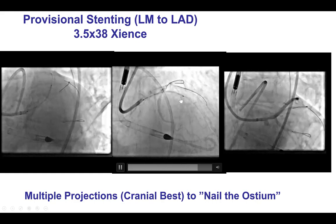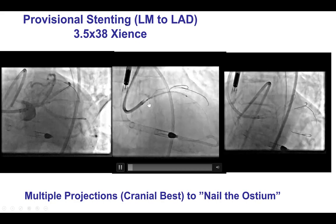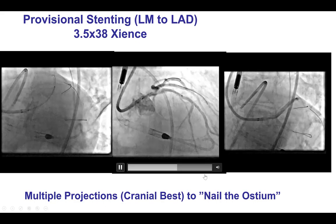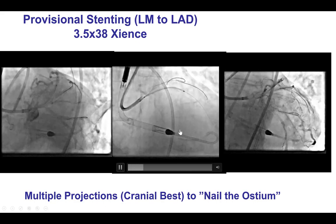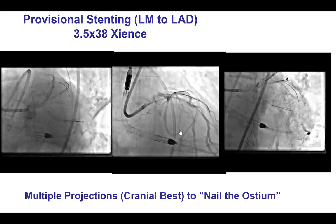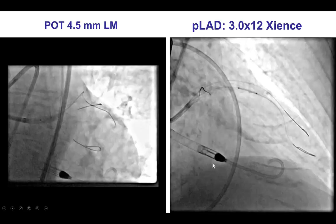We stented into the LAD, which seemed to be the bigger vessel, and used multiple projections to ensure that the stent was covering the ostium of the left main. This is something critical for all ostial lesions. If the ostium is uncovered, that can lead to restenosis. If there is too much stent prolapse, that can be a problem as well. You don't want to miss the ostium, and at the same time you don't want excessive overhang of the stent into the aorta. Make sure before you place the stent that the lesion is well prepared and that the stent is going to expand.